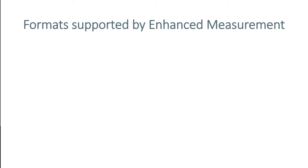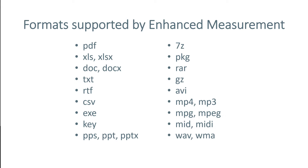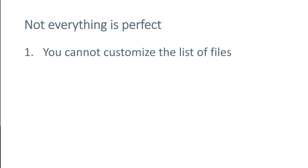So first, let's talk about file formats that are supported by Enhanced Measurement. These are the file extensions that Enhanced Measurement is looking for. So if the link that is clicked contains one of these file extensions, then Google Analytics 4 will track that event as a file download event. But if you have other files on your website that you want to track, and those files are not on this list, then you will need to go with a custom solution.